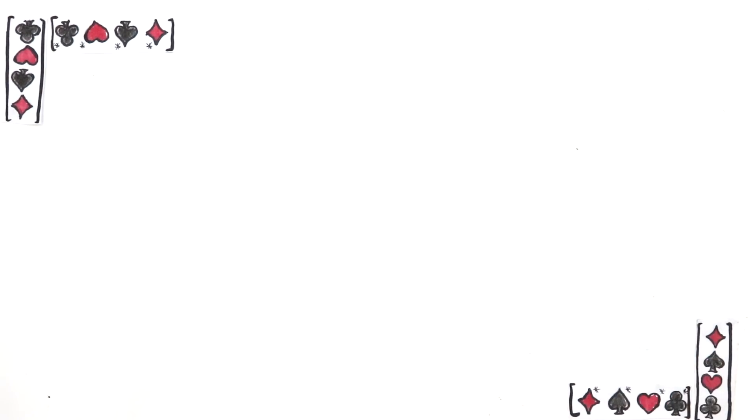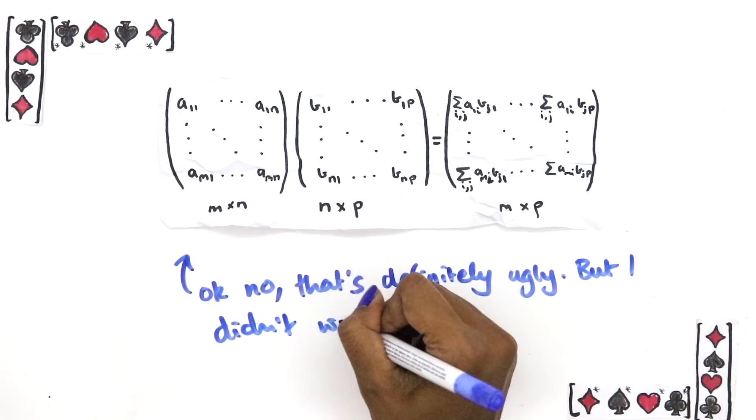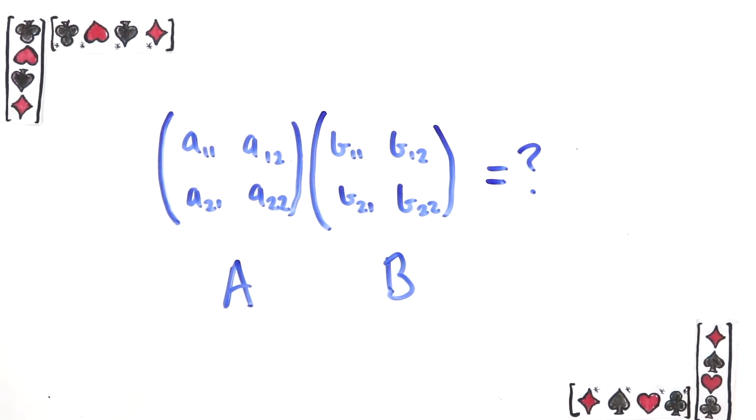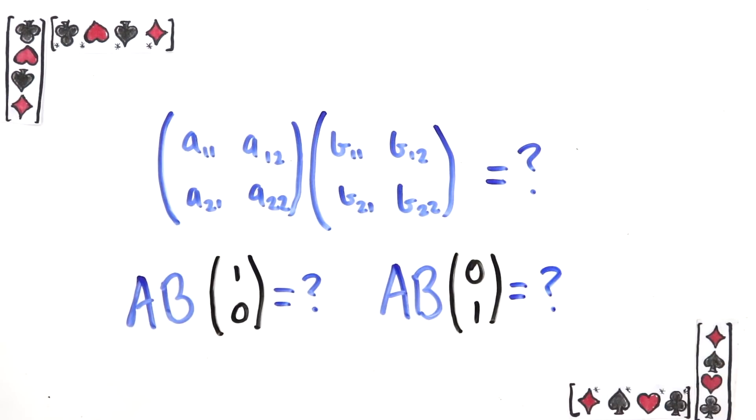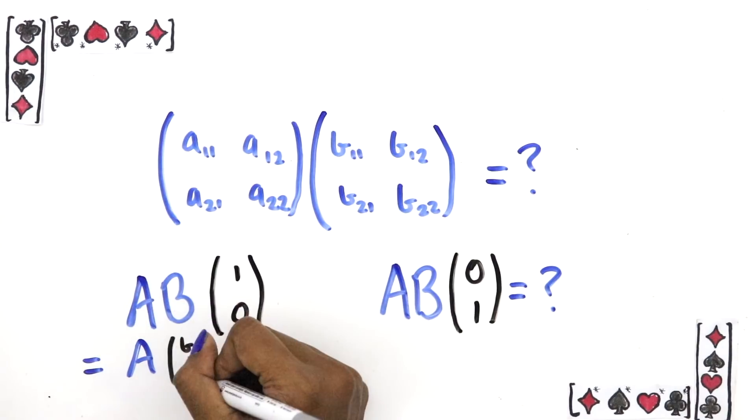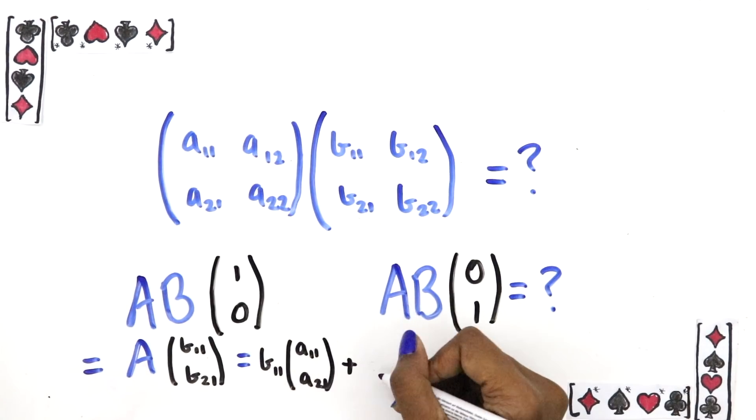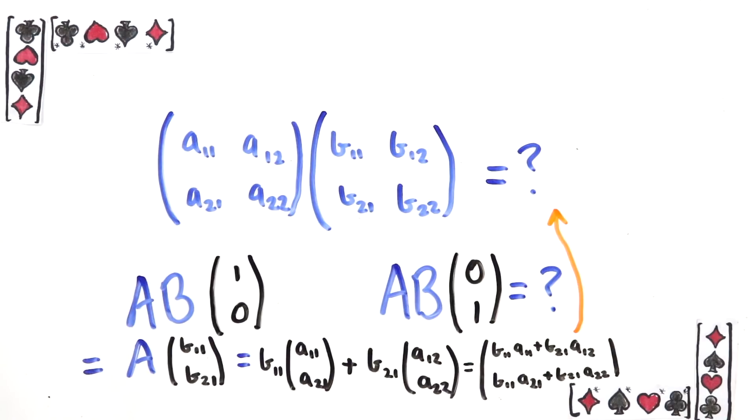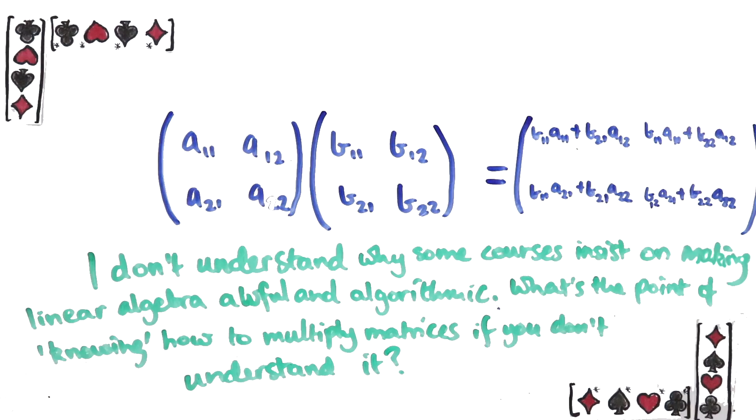So why does this lovely idea of composing maps lead to the awfulness that is the matrix multiplication formula? Well actually once you understand it the formula really isn't ugly at all. Let me show you what I mean by taking the case where A and B are two by two matrices. How would we try and write AB as a matrix in a particular basis? Well let's just follow our own rules. We need to find out what AB does to each of the basis vectors. Let's do the first one. Well when we apply B we get the first column of B by definition. But then we apply A and we get b11 times the first column of A plus b21 times the second column. This result is our first column of AB. Do the same for the second basis vector and here is the formula. See matrices aren't so painful after all.